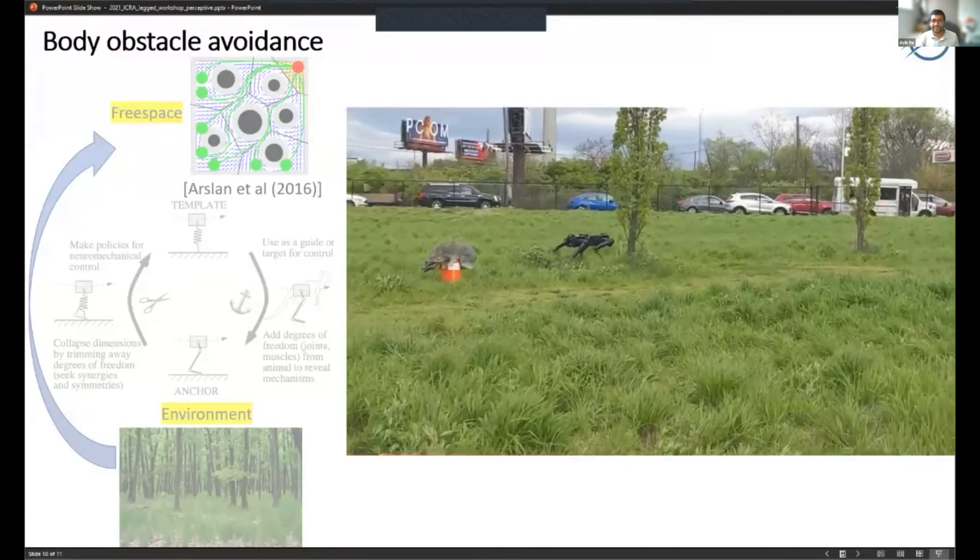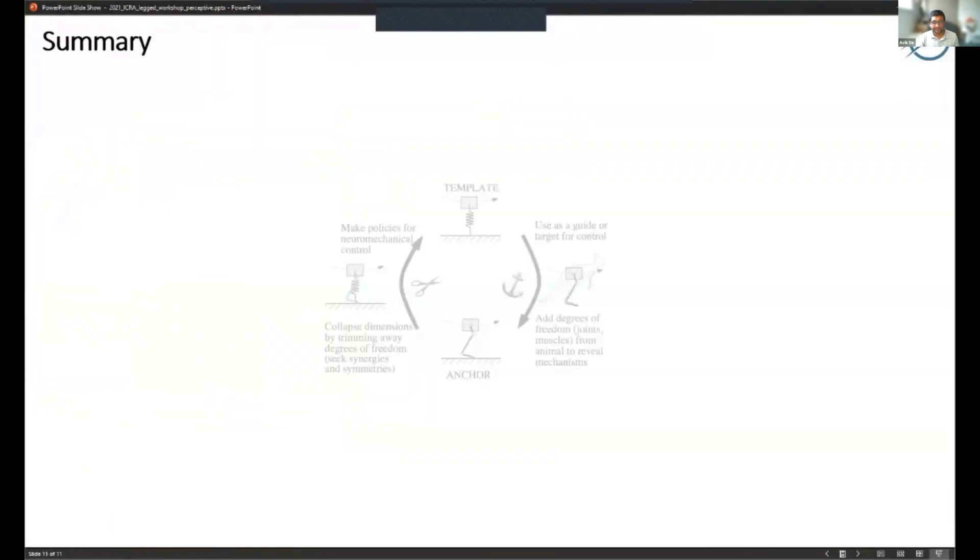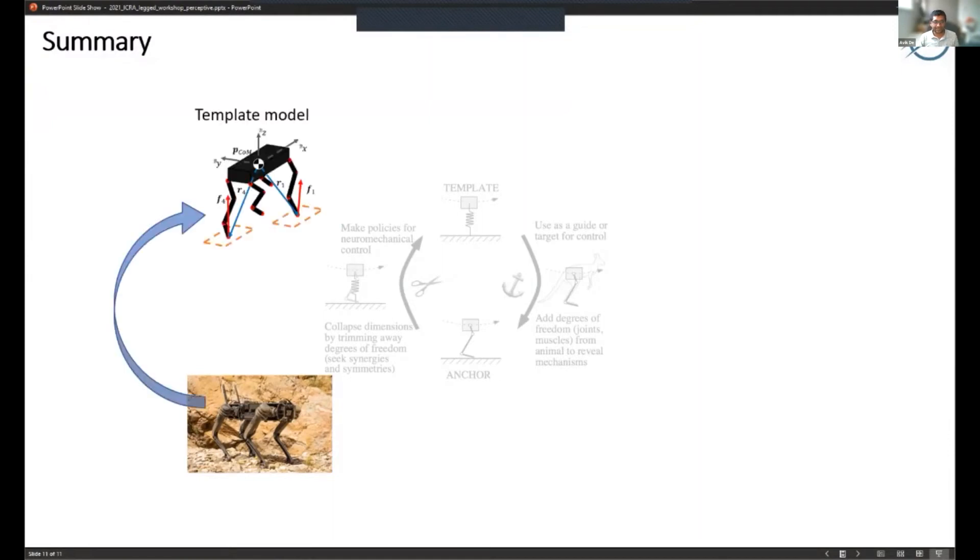Just to summarize, what we talked about today was some existing ideas and well-understood ideas of how to take complicated robot models and control them with simpler models in mind - like floating torso, like we talked about today in many of the talks.